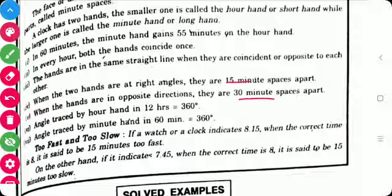Then, angle traced by hour hand in 12 hours is 360°. Angle traced by minute hand in 60 minutes is 360°.